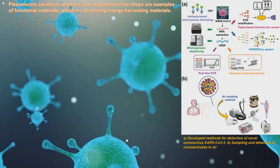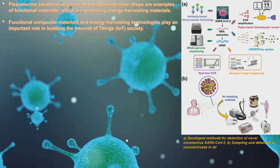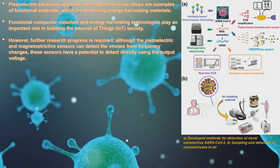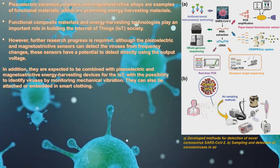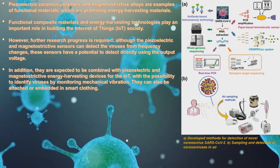Piezoelectric ceramics, polymers, and magnetostrictive alloys are examples of functional materials promising for energy harvesting. Functional composite materials and energy harvesting technologies play an important role in building the Internet of Things society, but further research progress is required. Although piezoelectric and magnetostrictive sensors detect viruses from frequency changes, they also have potential to detect directly using output voltage, and are expected to be combined with energy harvesting devices for IoT. With the possibility to identify viruses by monitoring mechanical vibrations, they can also be attached or embedded in smart clothing.